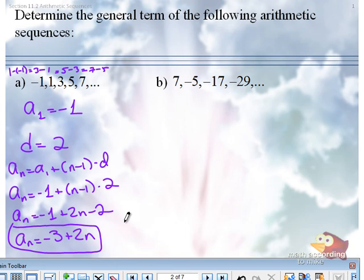And you can check your work here because if you pick a number for n, like for instance, if I said find a₅, if we put in five for n, what number should we get? Seven, because that's the fifth term.